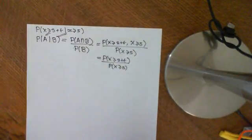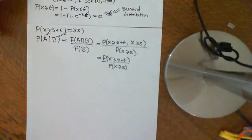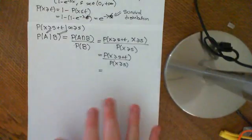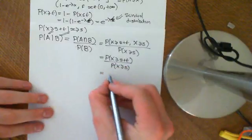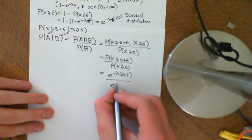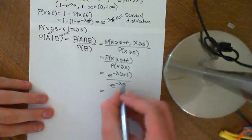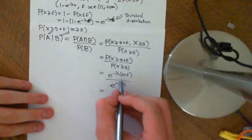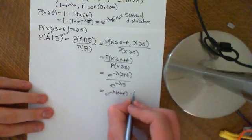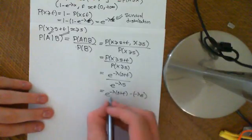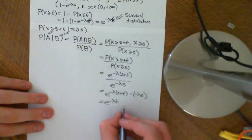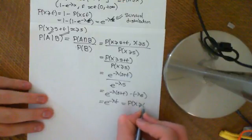Now we calculated that the probability that x is greater than or equal to t is e to the negative lambda t. So the probability that x is greater than or equal to s plus t divided by the probability that x is greater than or equal to s is e to the negative lambda(s+t) divided by e to the negative lambda s. Dividing two exponentials is the same as subtracting the powers, so this is e to the negative lambda(s+t) minus lambda s, which gives e to the negative lambda t — which is indeed equal to the probability that x is greater than or equal to t.